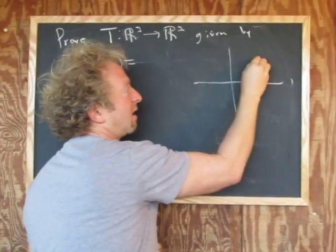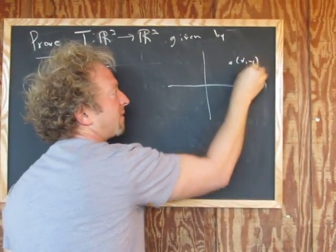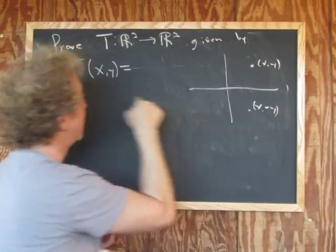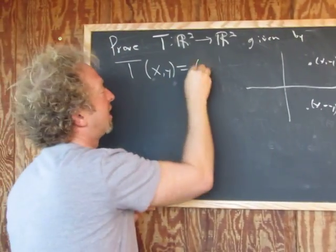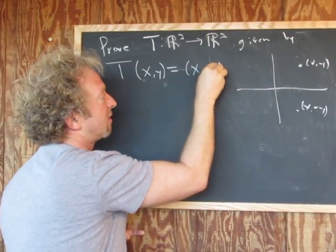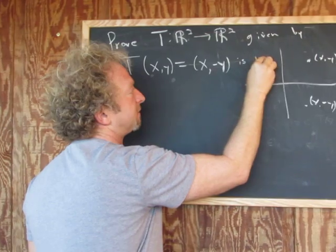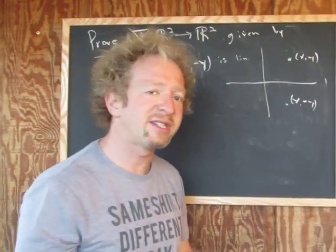We said that if this was X, Y, then it has to reflect it, and so this will be X negative Y. And so what do we do? We just send the vector X, Y to the vector X negative Y. Beautiful stuff. So that's what we have to prove is linear, or a linear transformation.